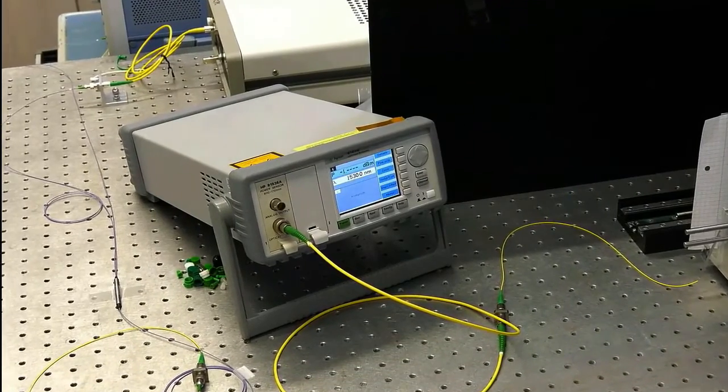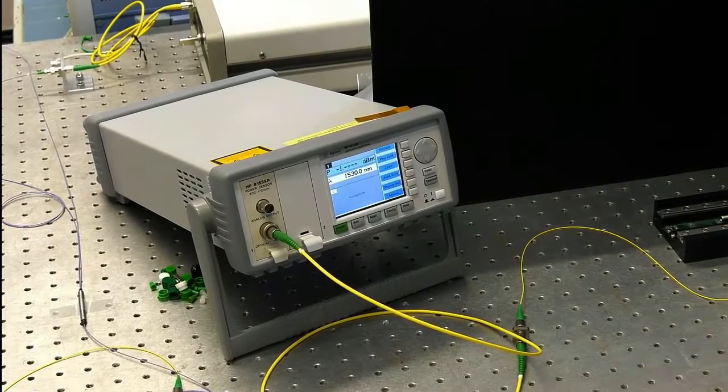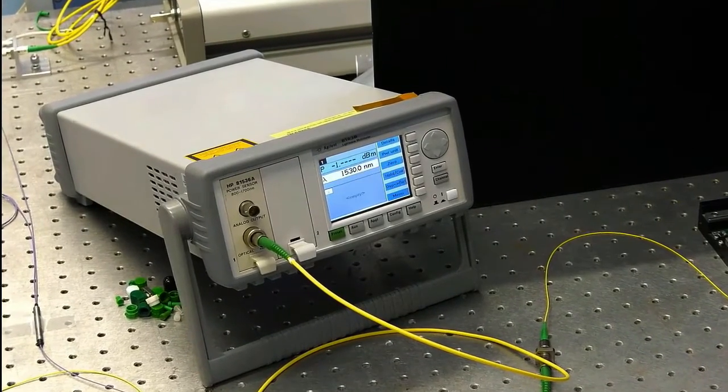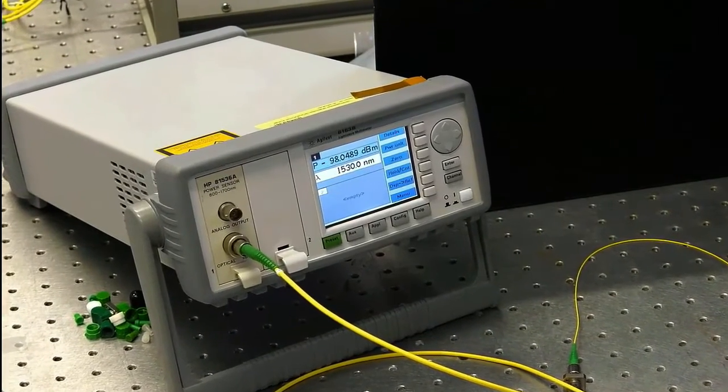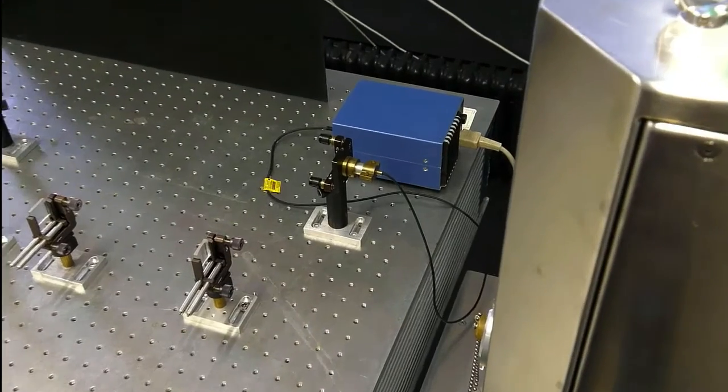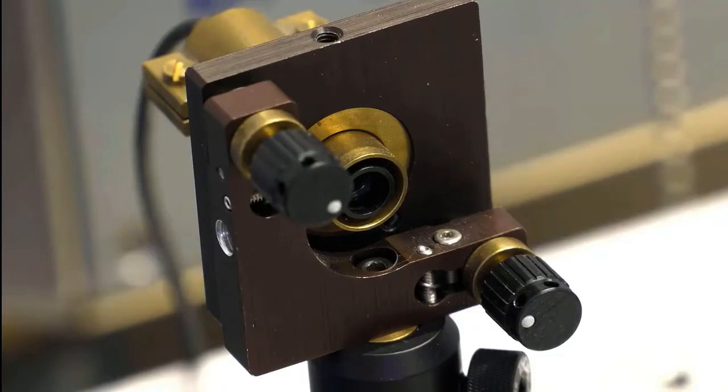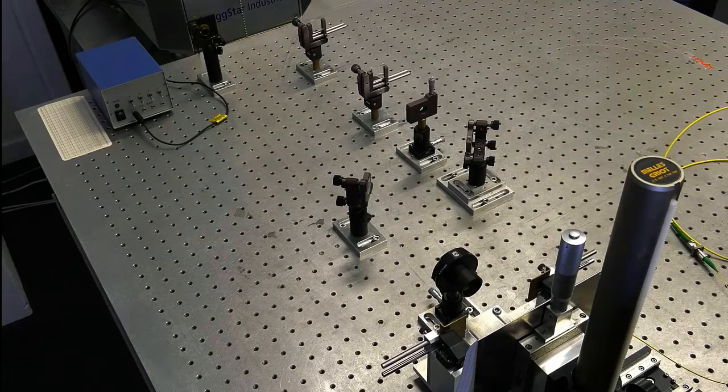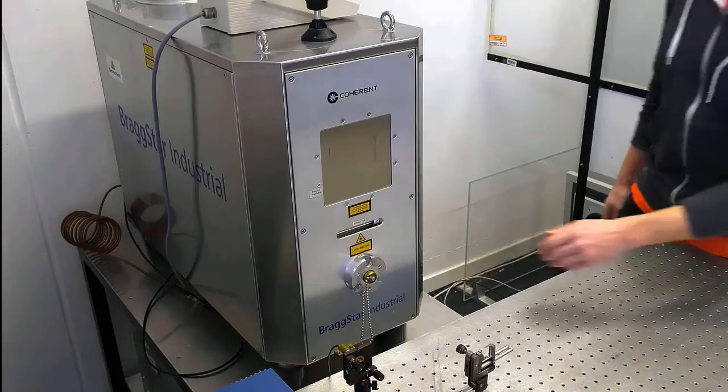For the laser adjustment, we first use a special adjustment fiber, which is connected to a power meter, so we can objectively check how good our alignment is. The small laser with the blue box is our pilot laser. Now that we explained the main components of the setup, let's start lasing.